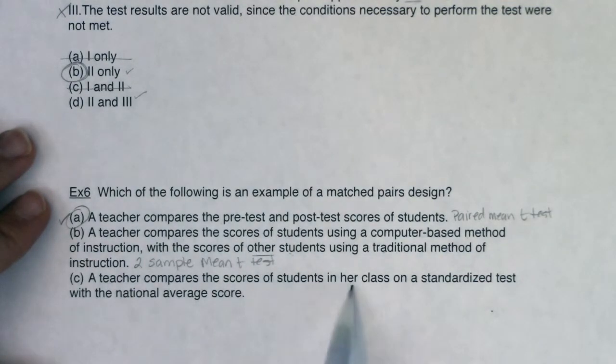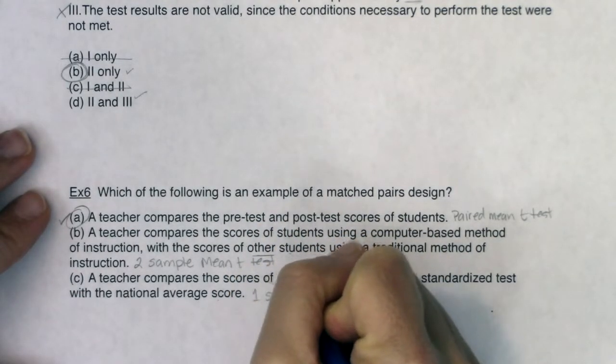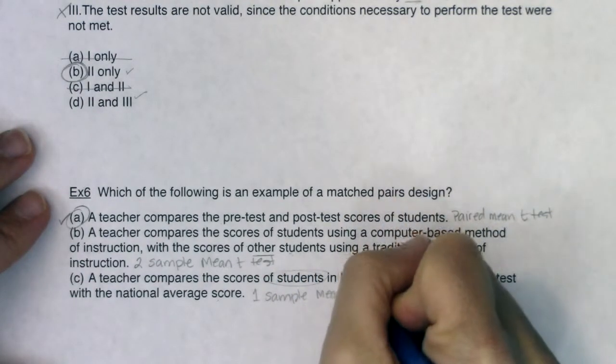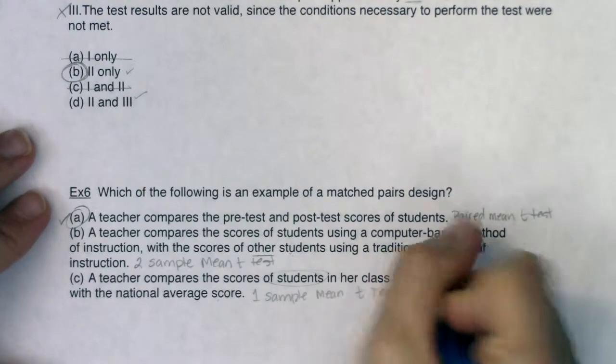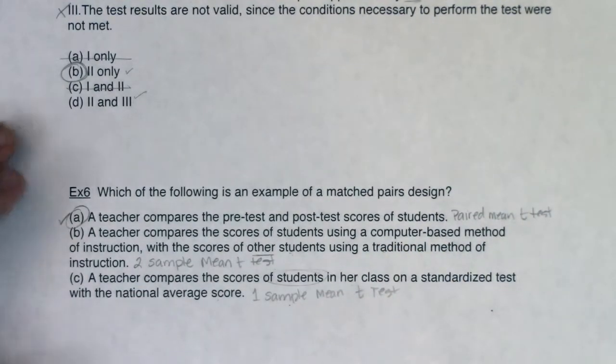So again paired samples or paired data independent samples. All right a teacher compares the scores of students in her class on a standardized test to the national average. Well this is just they only have one set of students right. This is just one set of students. So this is a one sample mean t-test. Right we're going to compare that teacher's average to whatever the national average was. So here we had paired mean, two sample mean, one sample mean. All right so we got a couple more multiple choice that we're going to try out and then we're almost done with this chapter. I'll see you in a bit gang.